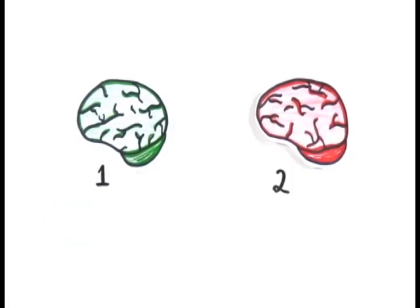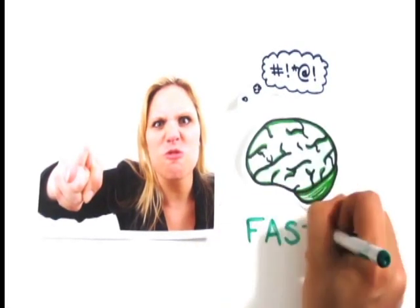You may not realize it, but your brain actually processes information in two very distinct ways. Like when you look at this photo, you instantly know she has blonde hair, is visibly angry, and likely has some choice words to yell. Without any effort, you experienced fast thinking.